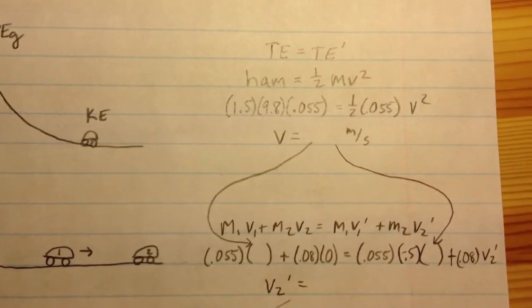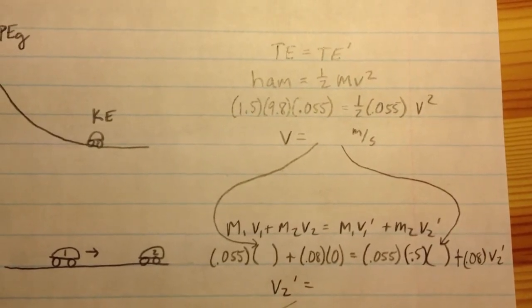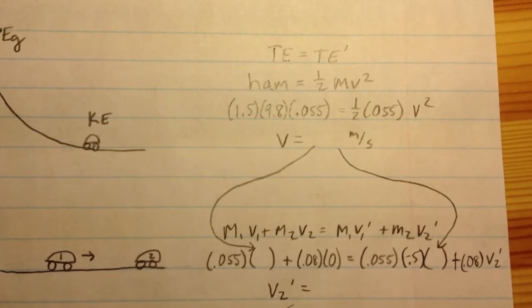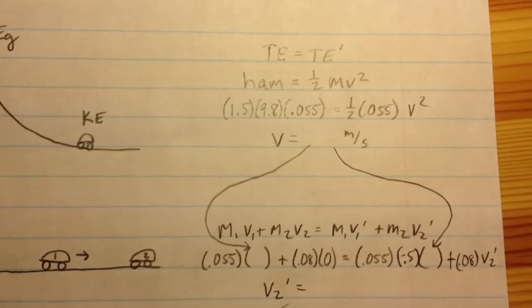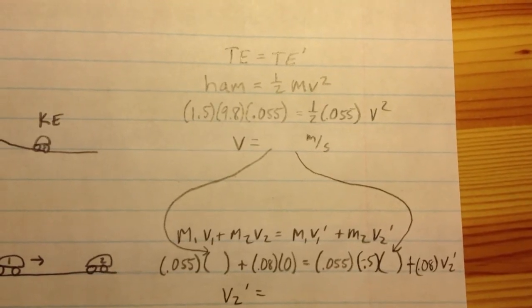Car 1 after the collision will be going half of its original speed but in the opposite direction. That's why I have negative 0.5 times the original speed. And then you have to find the speed of car 2.